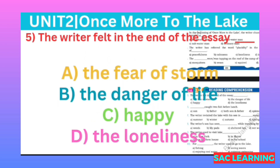Number five: What did the writer feel at the end of the essay? (Essay ke aakhir mein musnif ne kya mehsoos kiya?) Option A: the fear of storm, B: the danger of life, C: happy, D: the loneliness. Correct option is C, happy.